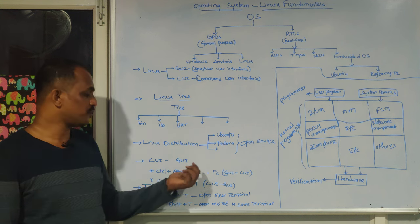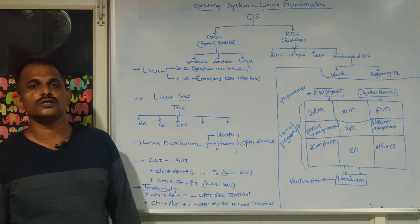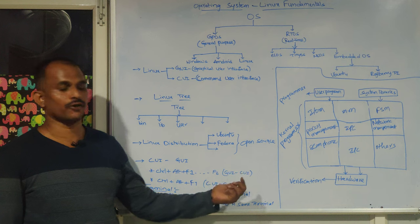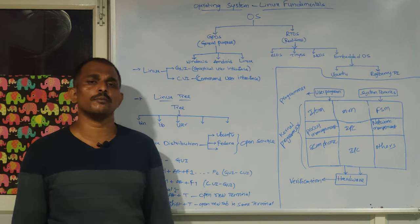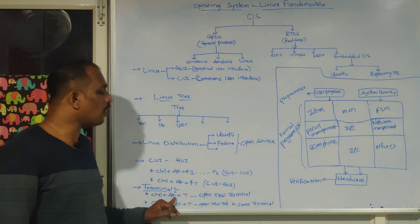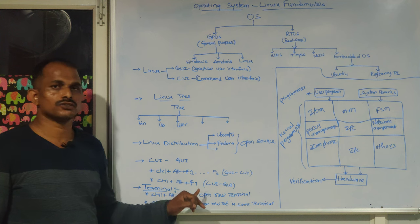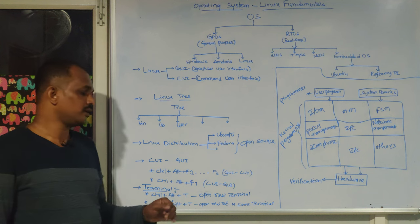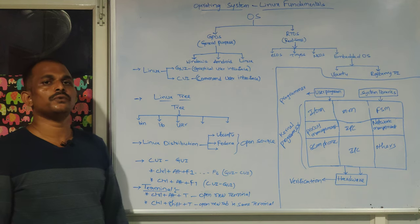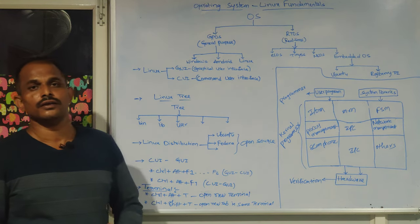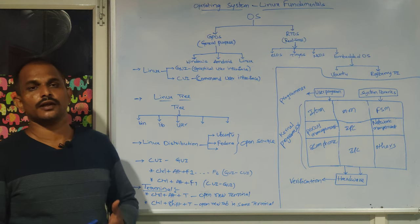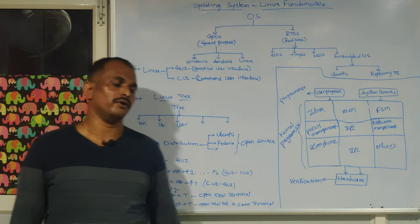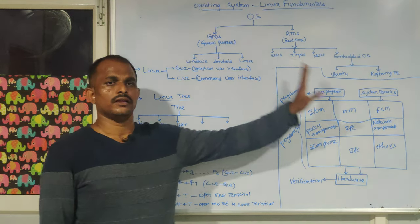In Ubuntu, to switch from GUI mode to CUI mode you use Ctrl+Alt+F1 through F6. To come back from CUI to GUI mode you press Ctrl+Alt+F7. To open a terminal from your Linux Ubuntu desktop, press Ctrl+Alt+T. To open multiple tabs in the same terminal, press Ctrl+Shift+T. This is how you navigate and create users in the Linux operating system.